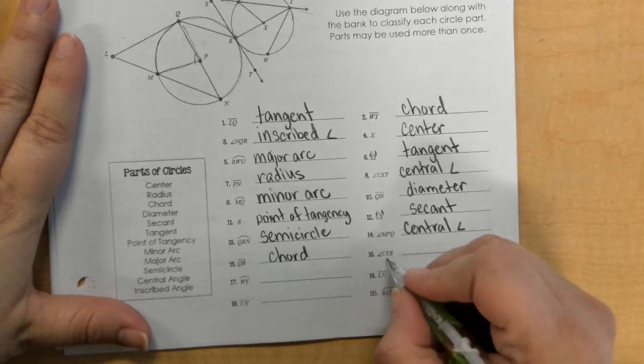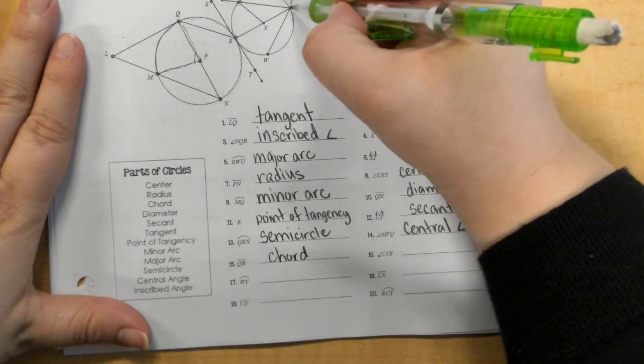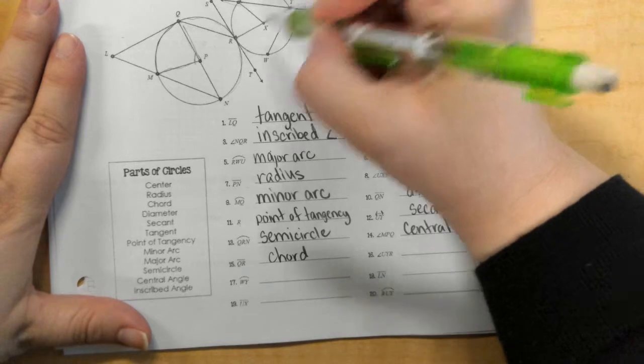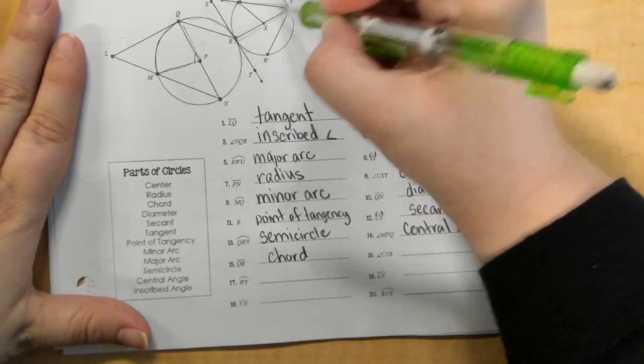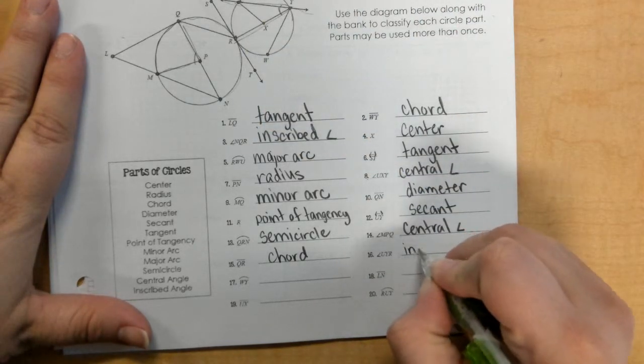Angle WUR, so right here, this angle, that would be an inscribed angle.